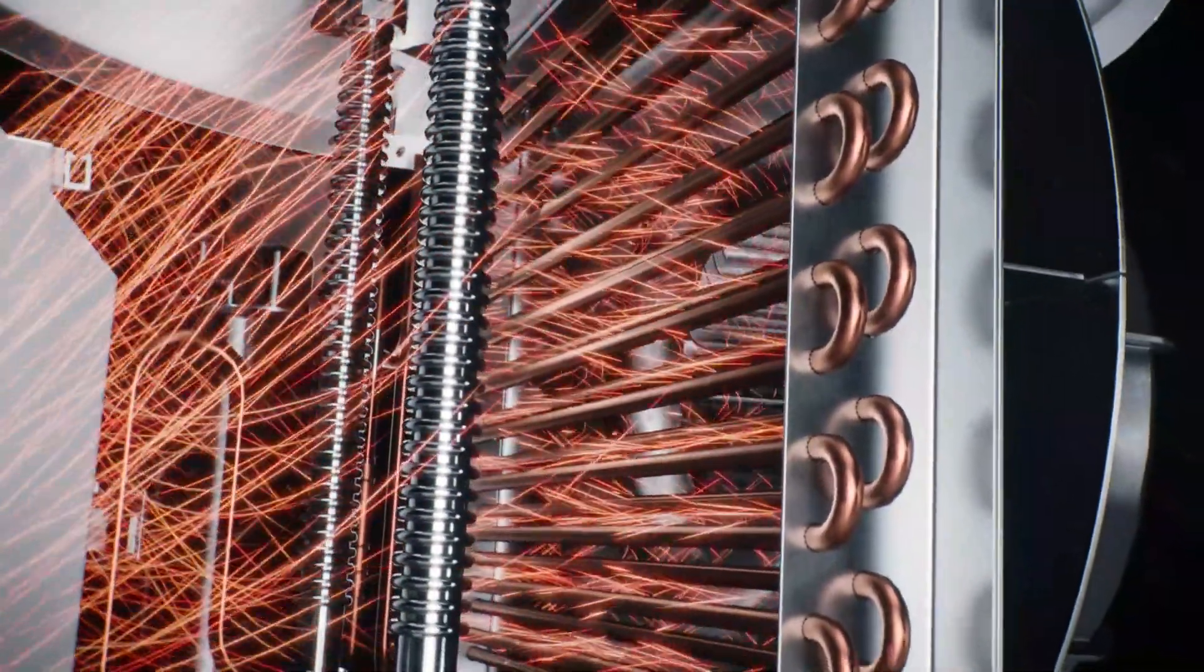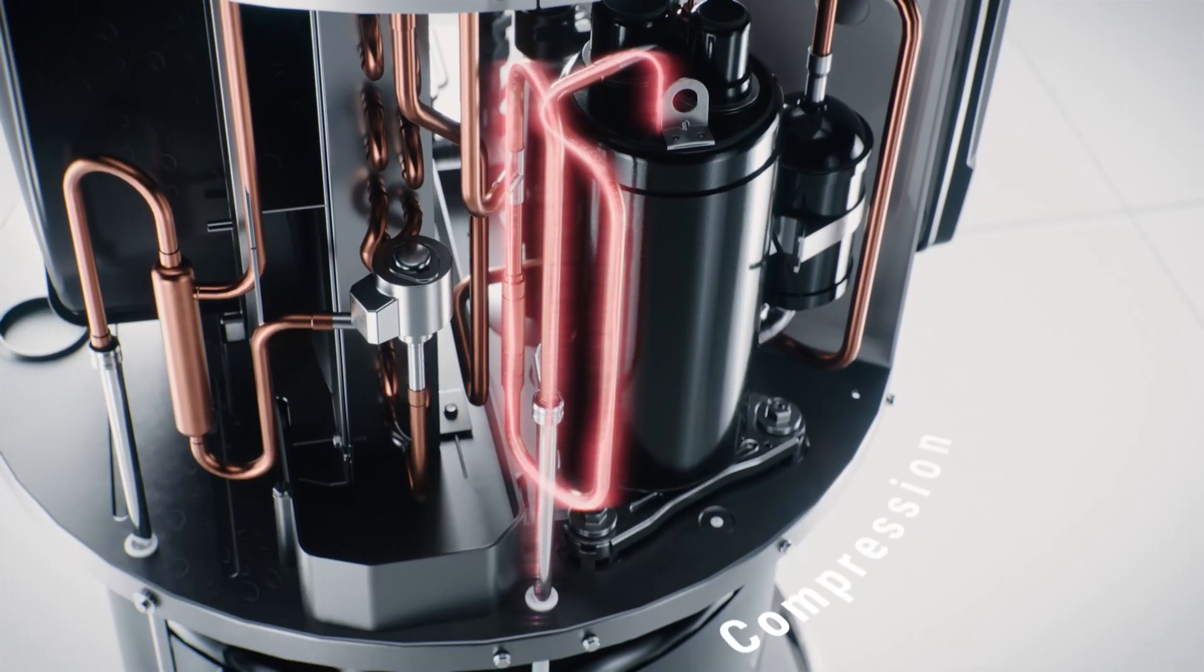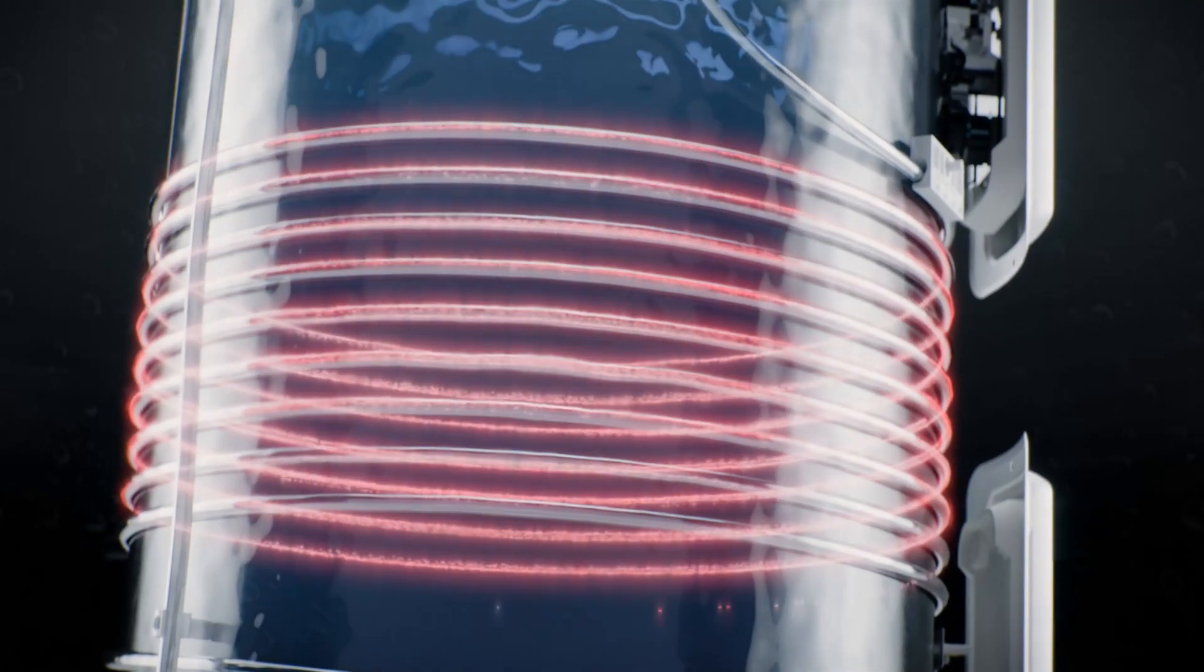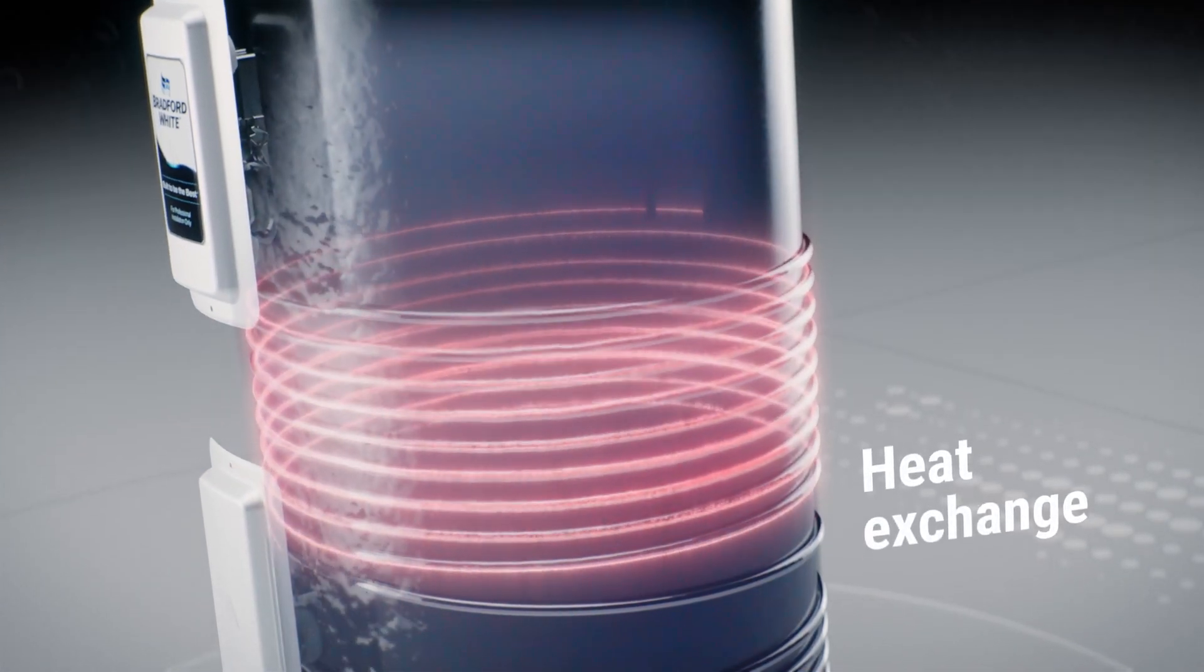The heat from the air is transferred to the refrigerant inside the coil, turning it into a vapor. A compressor compresses the vapor, pumping it through the condenser coil that is wrapped around the tank. The vapor transfers the heat to the water.